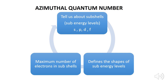The second quantum number is the azimuthal quantum number, also known as the angular quantum number or the subsidiary quantum number. It tells us about the subshells — s, p, d, and f — where s denotes spherical, p for principal, d for diffuse, and f for fundamental. It also tells us the maximum number of electrons in each subshell and defines the shapes of the sub-energy levels.